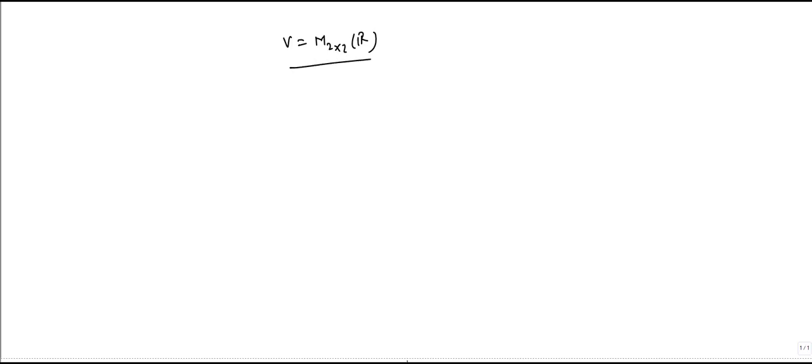Now consider a vector space V which is the set of all 2×2 matrices over ℝ. We know that this is a vector space over ℝ with the usual matrix addition and scalar multiplication with a matrix, so this set forms a vector space over ℝ.